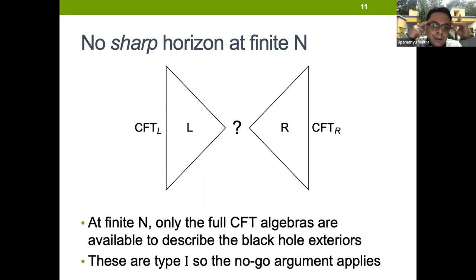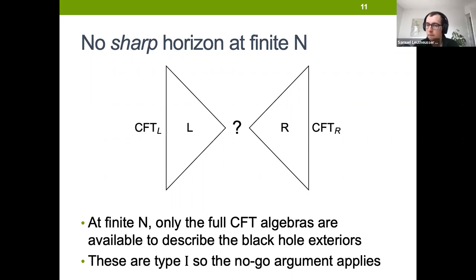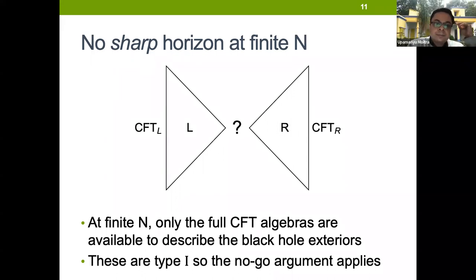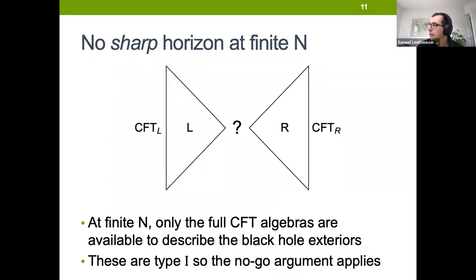Question: Does the no-go argument apply for a type II algebra? The end-of-December paper from Witten showed that it was becoming type II infinity. Can one find some projector in such an algebra? My suspicion is that the no-go argument does not apply for type II infinity, because to form those projectors to make that measurement you need the notion of a local Hilbert space, which you still don't have in type II infinity.